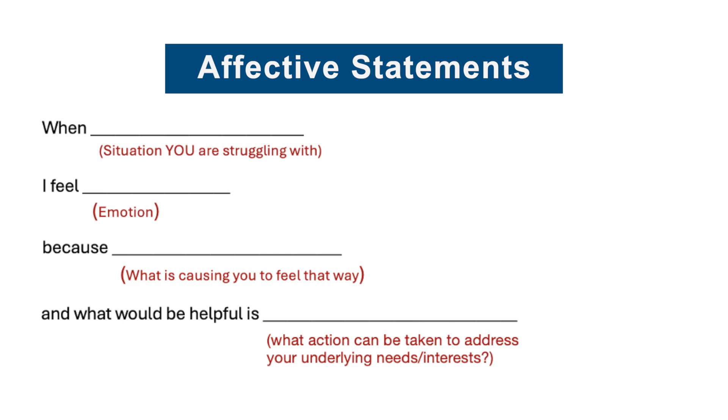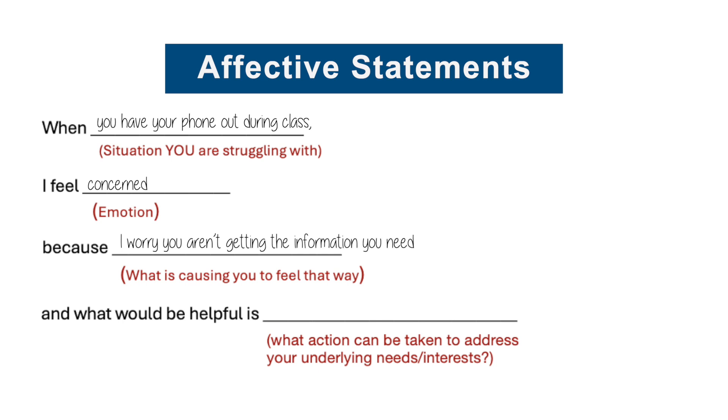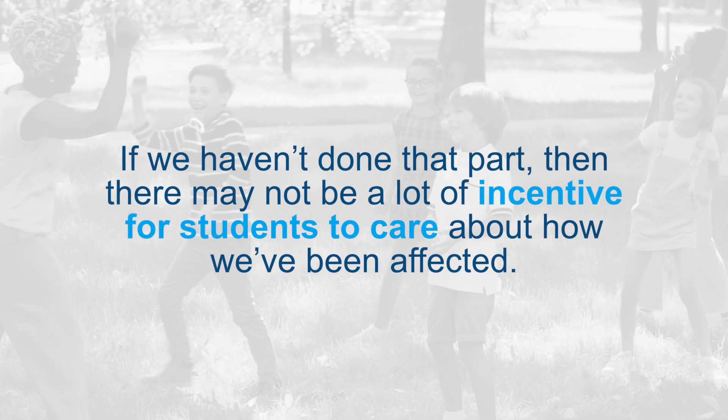The most important thing about asking these questions is that we do so without shaming, that we are open to hearing their perspective, and that we share our perspective. One way to do this is by using affective statements, also known as I-statements — a way to share how the behavior is making us feel, what the situation is that we're struggling with, and what would be helpful moving forward. For example: 'When you have your phone out during class, I feel concerned because I worry that you're not getting the information that you need. What would be helpful is if you leave your phone in your backpack while I'm explaining the lesson.' This tool is not going to fix everything — it highlights the need for positive relationship building first.